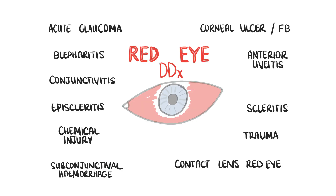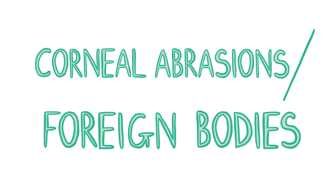This slide summarizes some differential diagnoses of red eye. Next, let's talk about corneal abrasions and corneal foreign bodies. A corneal abrasion refers to trauma to the surface of the eye, for example due to fingernail scratching, contact lens insertion or removal, or a foreign body. Patients will present with sudden onset of pain, lacrimation, conjunctival erythema, and mild photophobia, and may complain of grittiness in the affected eye as well as blurry or decreased vision.